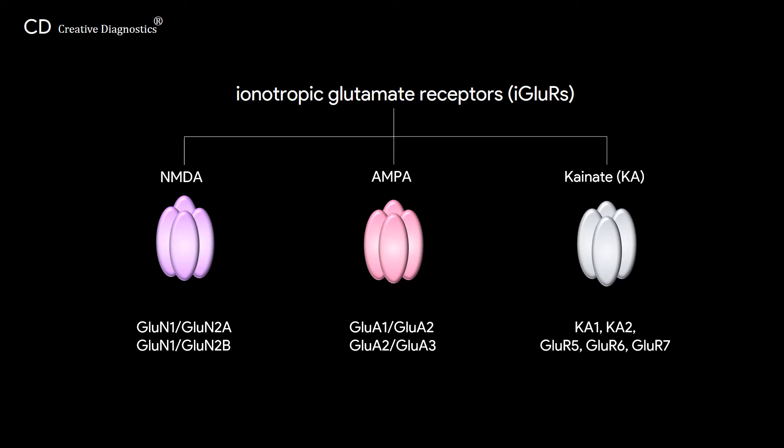Kainate receptors are also heterotetramers, which are composed of KA1, KA2, GLU-R5, GLU-R6, and GLU-R7 subunits.